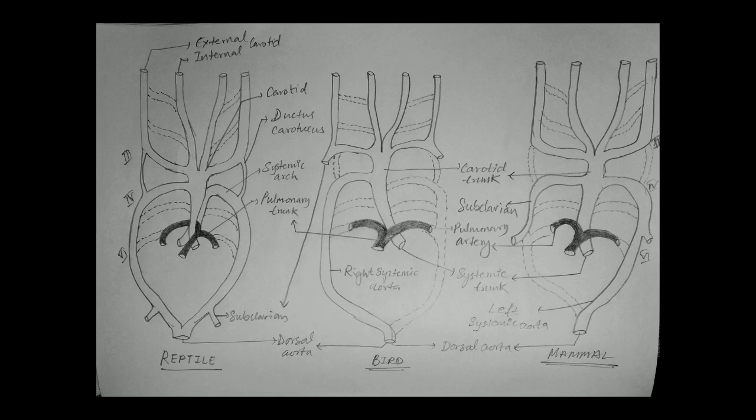The third aortic arch, with remnants of lateral and ventral aorta, represents the carotid arteries arising from the systemic aorta. The sixth arch is a single pulmonary trunk, taking deoxygenated blood from the right ventricle to the lungs. Embryonic ductus caroticus and ductus arteriosus disappear in adults; at birth or hatching, a ligamentum botalli or ligamentum arteriosum may remain in some birds or primitive mammals.